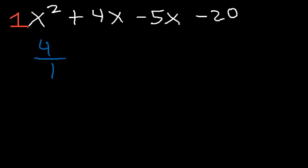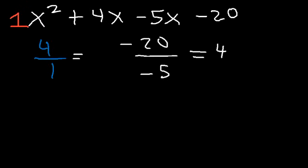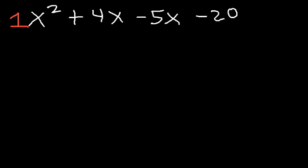is the same as negative 20 divided by negative 5. Both of these are equal to 4. When you see that, it means you can factor by grouping. If the coefficients of the first two terms have the same ratio as the last two, then this technique will work.